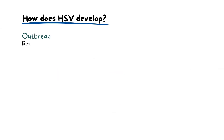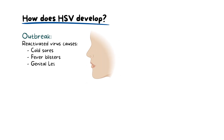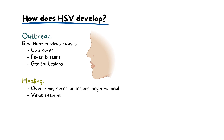In stage five, the reactivated virus causes an outbreak, resulting in the characteristic cold sores, fever blisters, or genital lesions. These can be uncomfortable and sometimes painful. Stage six is healing. Over time, the sores or lesions begin to heal. The virus then returns to its latent state within the nerve ganglia, waiting for another trigger to reactivate.